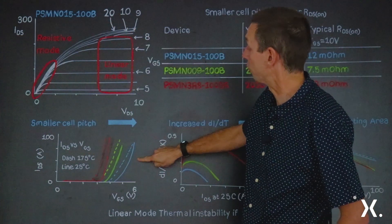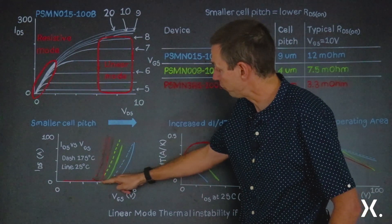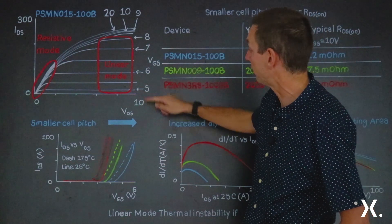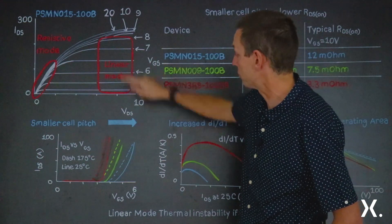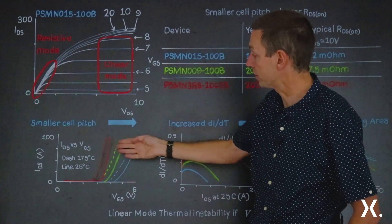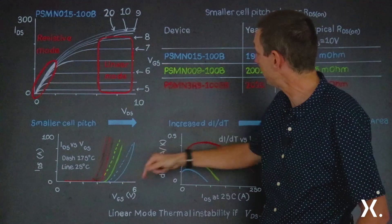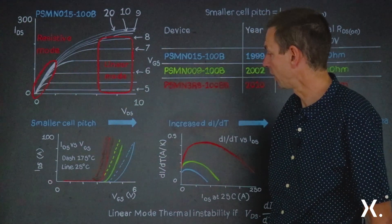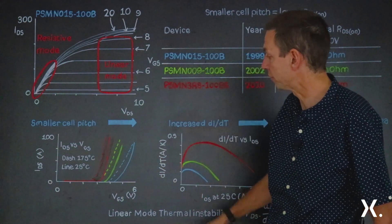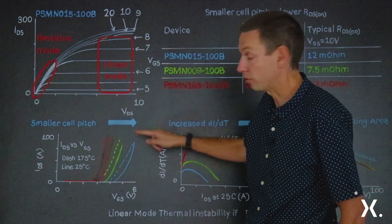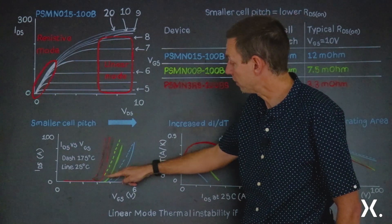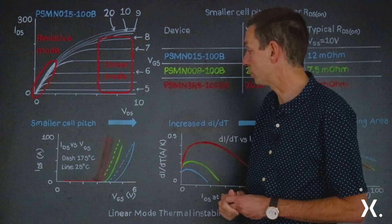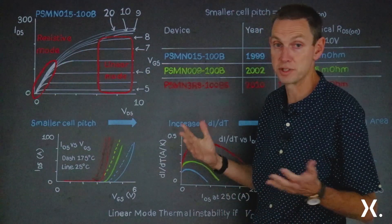For the PSMN015-100B (blue data), up to about 4 volts no current flows, then above 5 and 6 volts the current suddenly starts to increase — at 6 volts in the gate it's got up to something close to 100 amps. We've got similar characteristics for the PSMN009-100B in light green and the PSMN3R8-100BS in red. For all three MOSFETs, as gate bias increases, the current increases. Each device also has a solid line (at 25°C) and a dashed line (at 175°C). Critically, more current comes out of the MOSFETs at 175°C than at 25°C, and this is very important in understanding whether the device will be stable in linear mode.